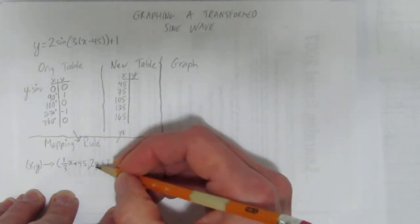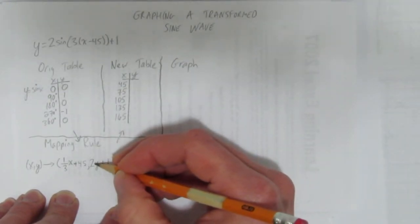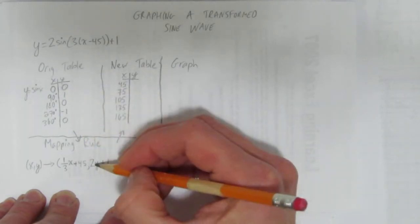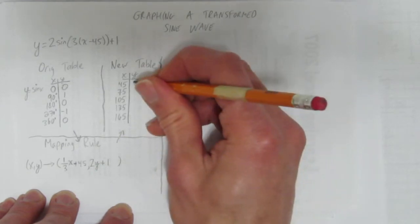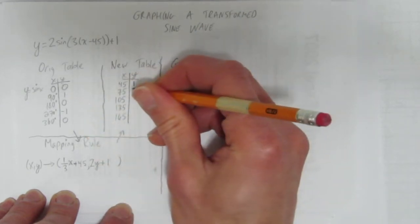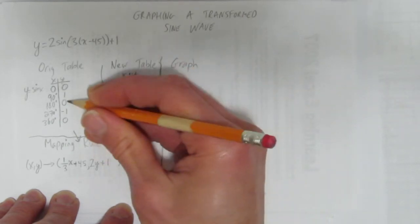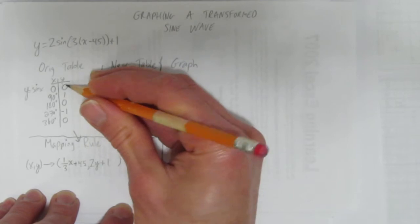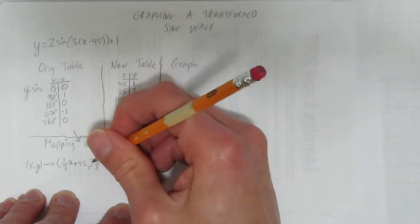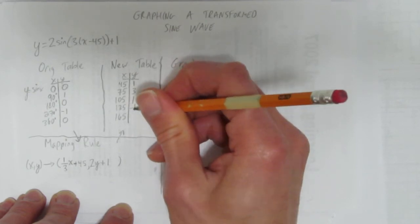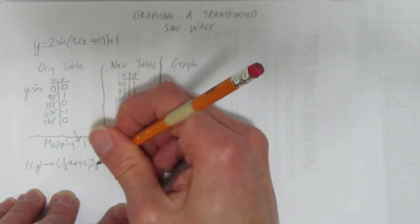The y's are usually a lot easier, and they are in this case. Just take the y's, go two times whatever the y is, add 1. So I'll walk you through. 2 times 0, 0, plus 1. 2 times 1, that's 2, plus 1. 2 times 0, plus 1 again. It's the same thing as last time. It's the same number, 0. 2 times negative 1, that's negative 2, plus 1 gives negative 1. And finally 0 again, 0 times 2 plus 1. We've got our new table.